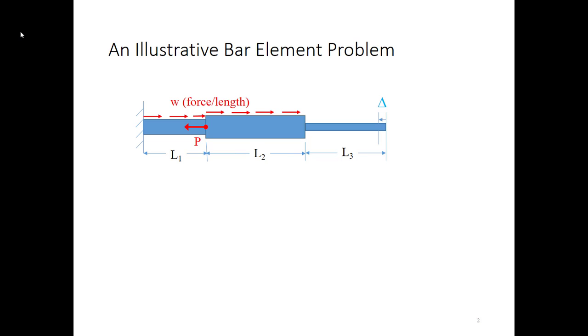We've got an end reaction on the left side, a point load applied at the transition between the two diameters. We've got a distributed force along the first two diameter segments, and then lastly we have an imposed non-zero displacement acting on the right side of the bar.